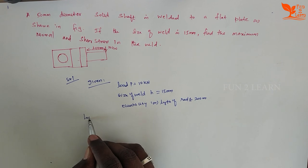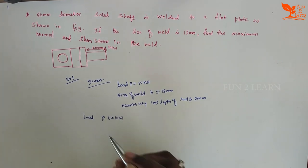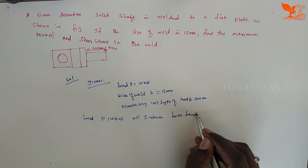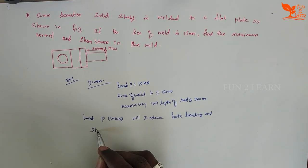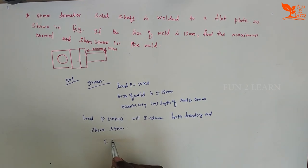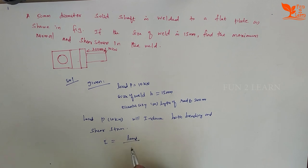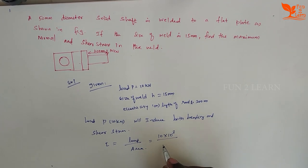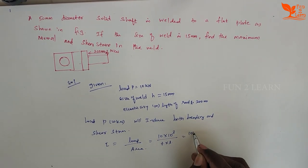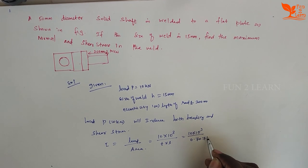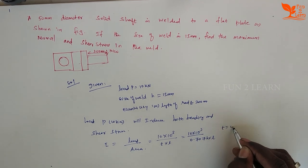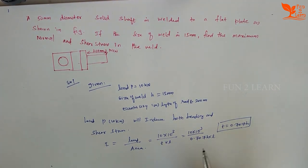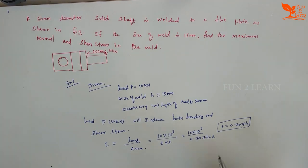The load P, that is 10 kN, will induce both bending and shear stress. Shear stress equals load divided by area. Shear stress: load is 10 kN, so 10 × 10³ divided by area. Area equals 0.707 × H × L, where L is the length.